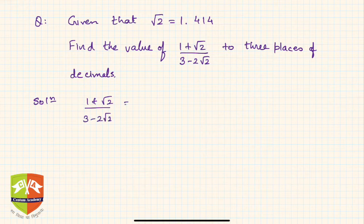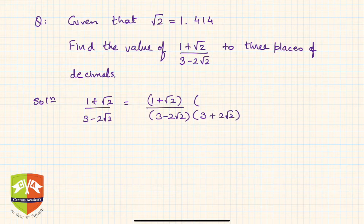1 plus root 2 divided by 3 minus 2 root 2 can be multiplied by its conjugate, which is 3 plus 2 root 2, and then the same thing has to be done on the numerator as well. So this is the final multiplication.